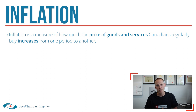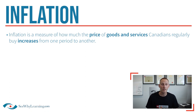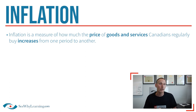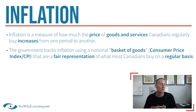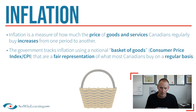Inflation measures how much prices increase from one period to another. But do you think that the government — or more specifically Statistics Canada — actually tracks the price of every single good and service in the country? Of course not, that would be virtually impossible. So instead the government tracks the price of what we call a basket of goods. This all ties into something called the Consumer Price Index, or CPI — an acronym you might have seen before.